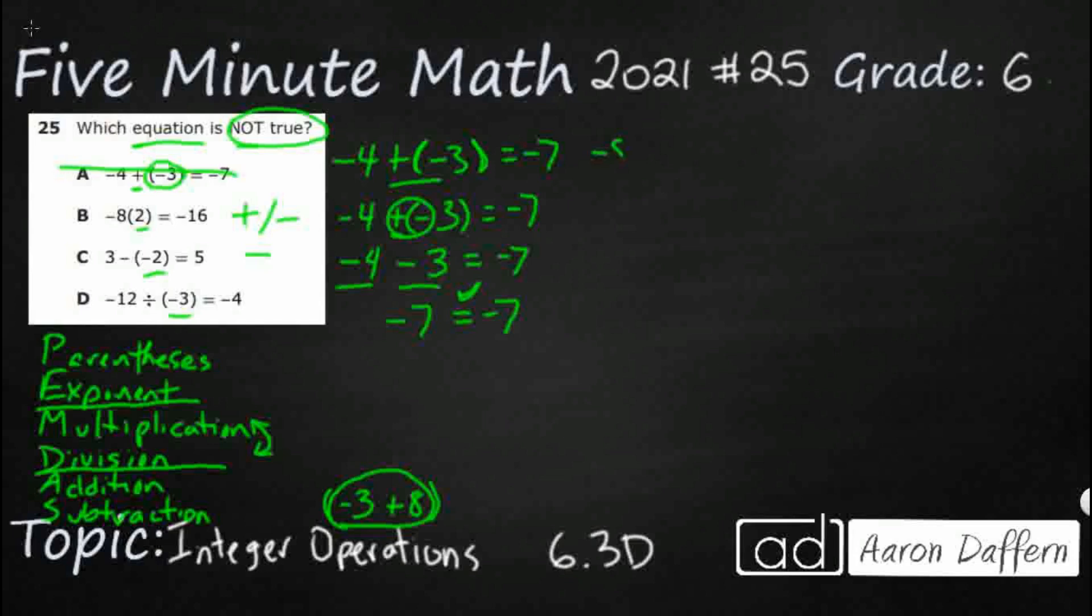So this next one, negative 8 times 2 equals negative 16. So this is simply separating the minus 8 and the 2. And since there's no operation in between there, it's actually going to represent multiplication. It's going to look like negative 8 times 2, which equals negative 16.